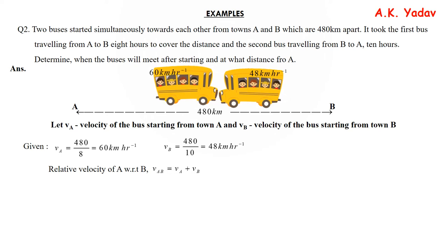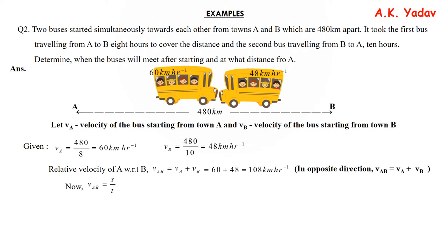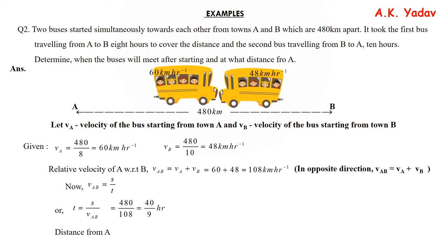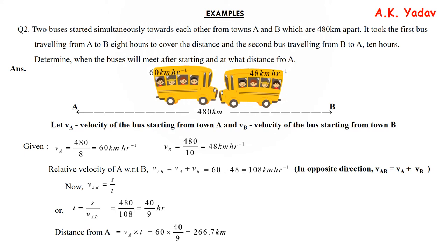The buses move towards each other, so the relative velocity VAB = VA + VB = 60 + 48 = 108 km/h. Time to meet: T = S / VAB = 480 / 108 = 40/9 hours. Distance from town A = velocity × time = 60 × 40/9 = 266.7 km.